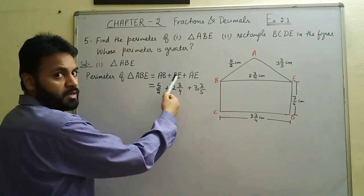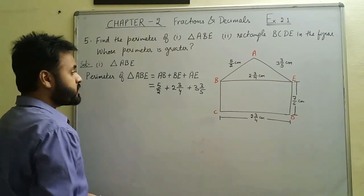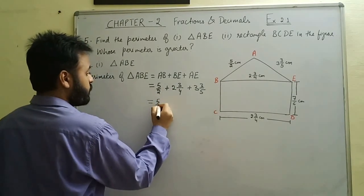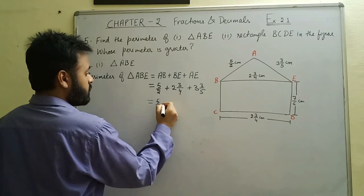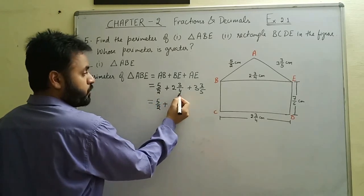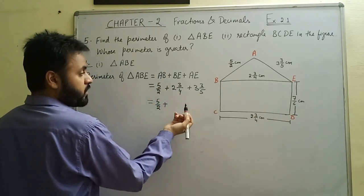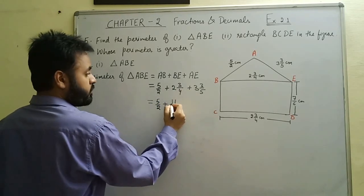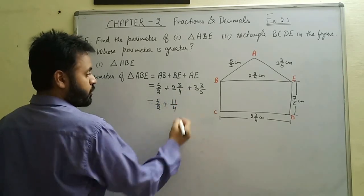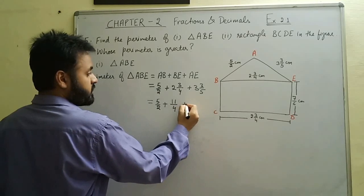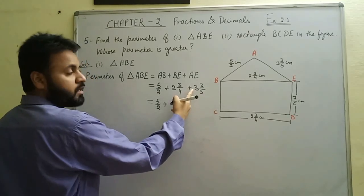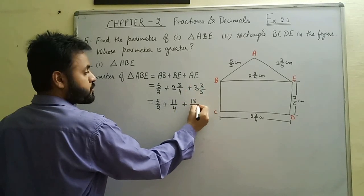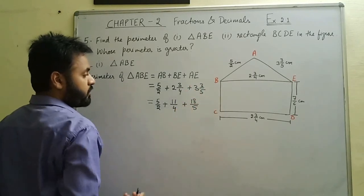We need to change the mixed fractions to improper fractions. 2¾ becomes: 2 × 4 = 8, and 8 + 3 = 11, so 11/4. For 3⅗: 5 × 3 = 15, and 15 + 3 = 18, so 18/5. These are unlike fractions, so we need to find the LCM of 2, 4, and 5.